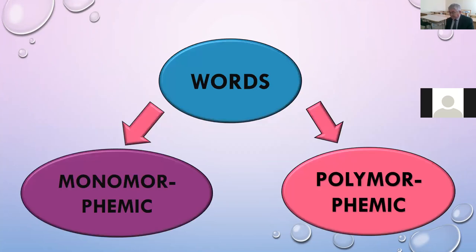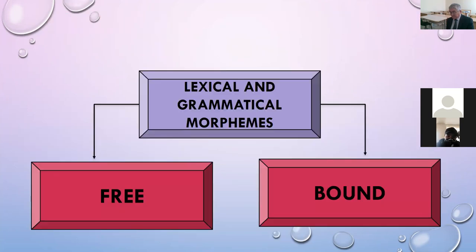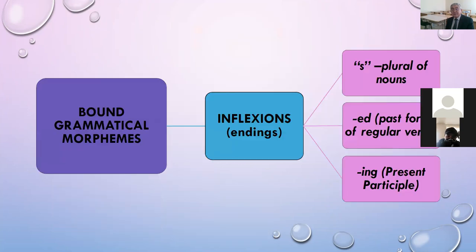Morphemes are divided into two kinds: free and bound. Free morphemes are morphemes which are identical with the word form. According to the number of morphemes, words are divided into monomorphemic and polymorphemic.